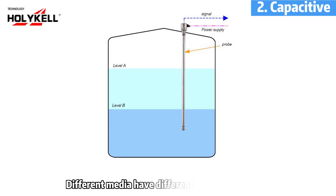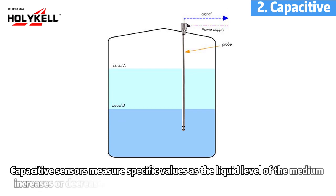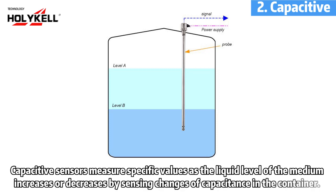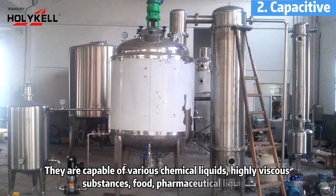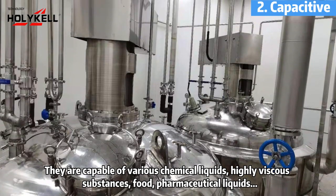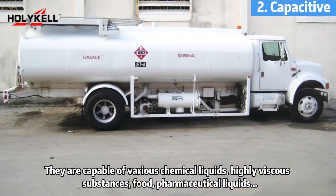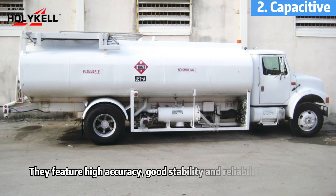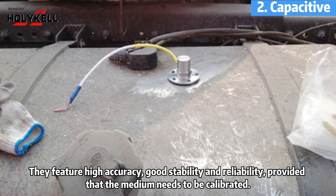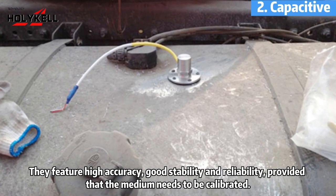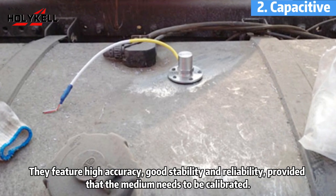Capacitive. Different media have different dielectric constants. Capacitive sensors measure specific values as the liquid level of the medium increases or decreases by sensing changes of capacitance in the container. They are capable of handling various chemical liquids, highly viscous substances, food, and pharmaceutical liquids. They feature high accuracy, good stability and reliability, provided that the medium needs to be calibrated.